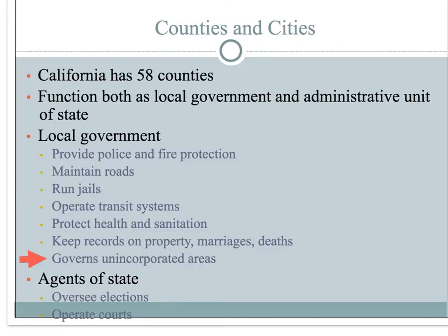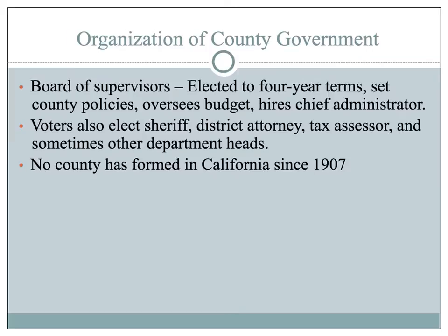Let's do a quick overview of California counties and cities. California has 58 counties that function both as a local government and as an administrative unit of the state. In its local government component, counties provide police and fire protection, maintain roads, run jails, protect health and sanitation, and govern unincorporated areas, among other responsibilities. In its duties as an administrative unit of the state, counties oversee elections and operate courts. Counties are run by a board of supervisors, which hires a chief administrator to oversee the day-to-day operations of county government.